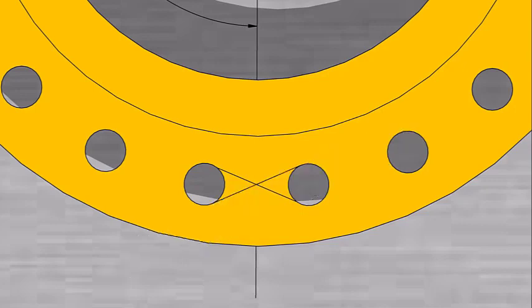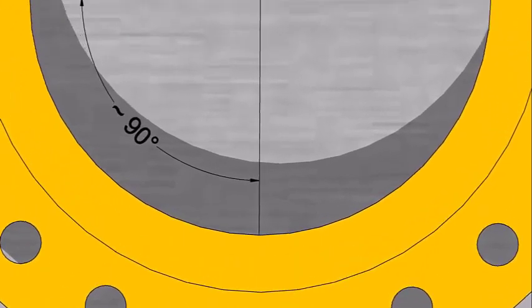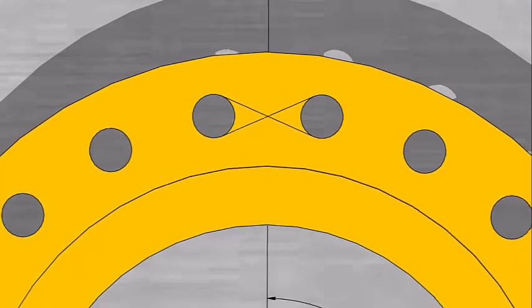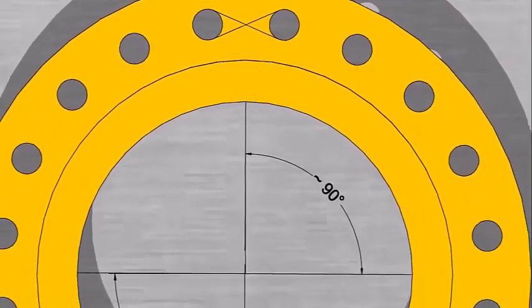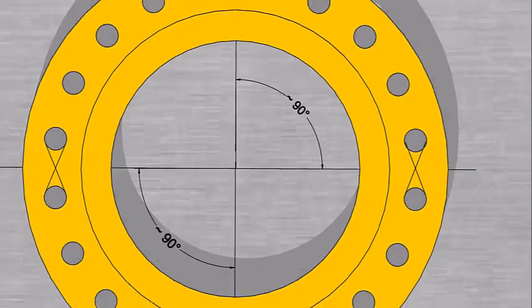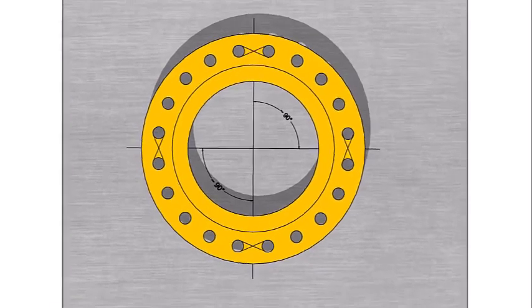Mark the center of the two holes opposite on the other side. Draw centers on 90 and 270 degrees and mark the center lines.